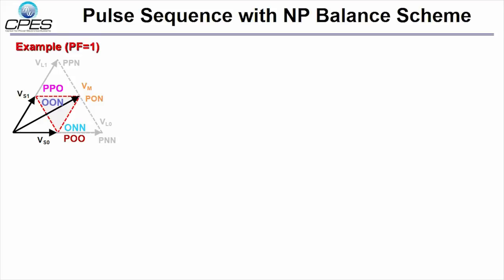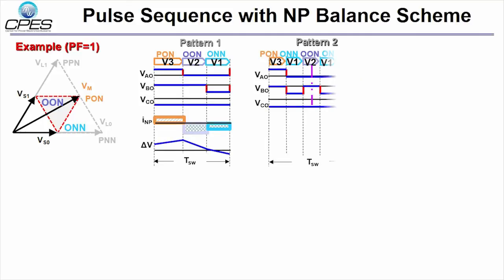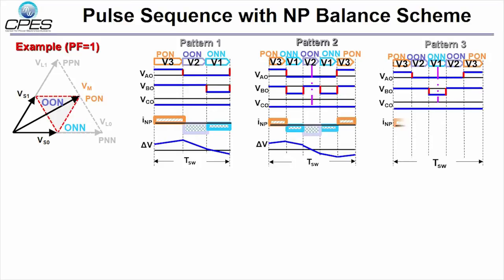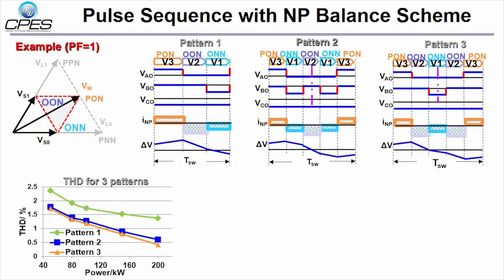The selected switching status can result in different pulse sequence patterns. Pattern 1 is asymmetrical sequence, and pattern 2 is symmetrical sequence with multiple switching events. Pattern 3 is symmetrical sequence with least switching events. The THD comparison shows that symmetrical sequence has smaller THD.